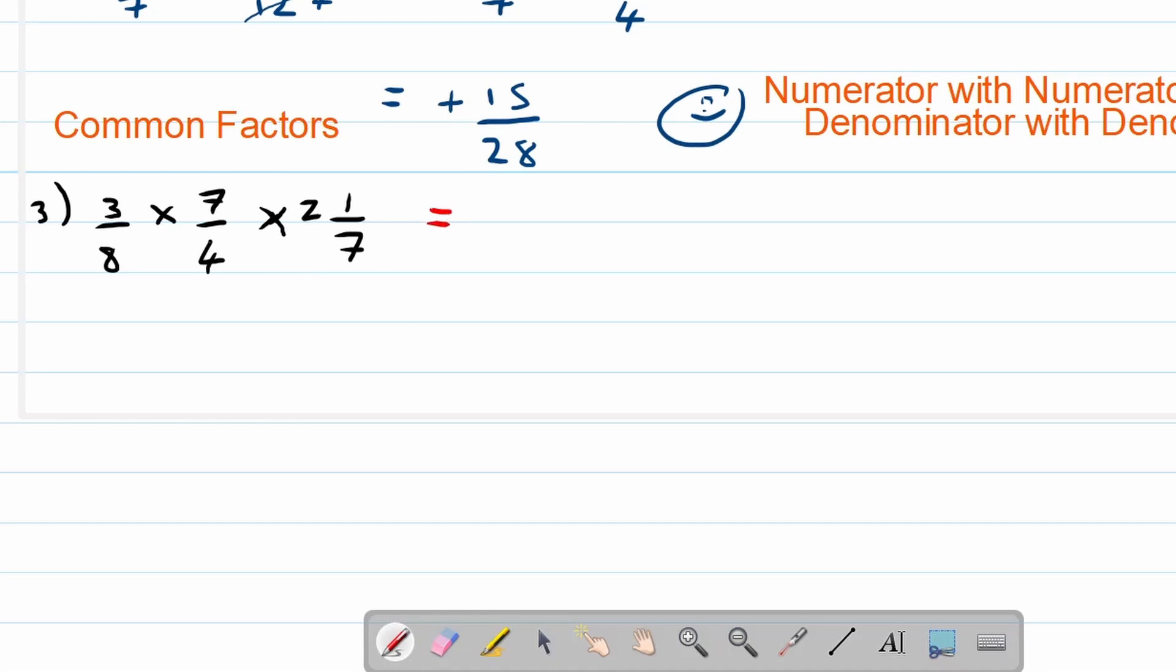So this can be written down as 3 over 8 times 7 over 4 times 15 over 7. How did we do that? 2 times 7 is 14. 14 plus 1 is 15.